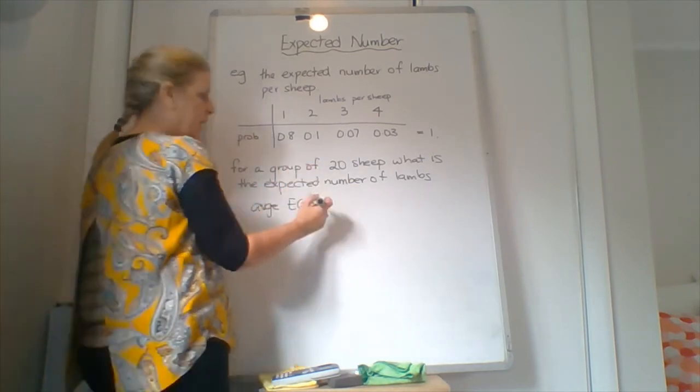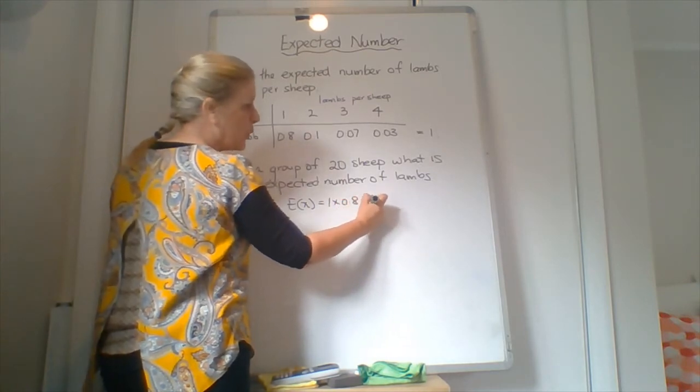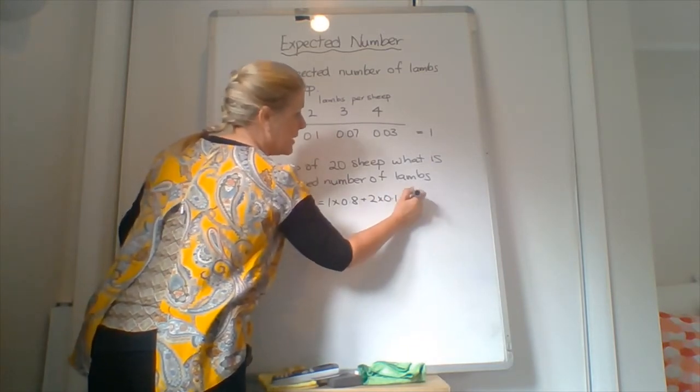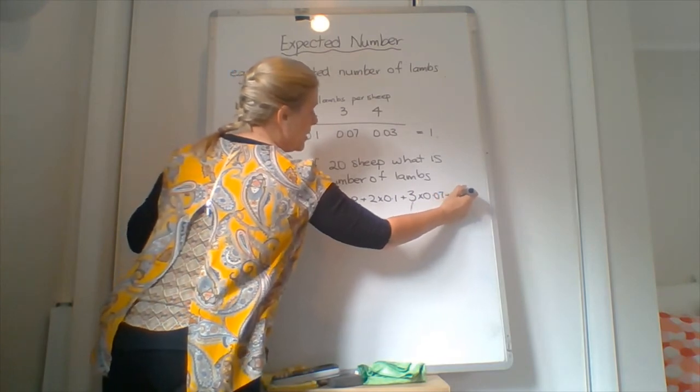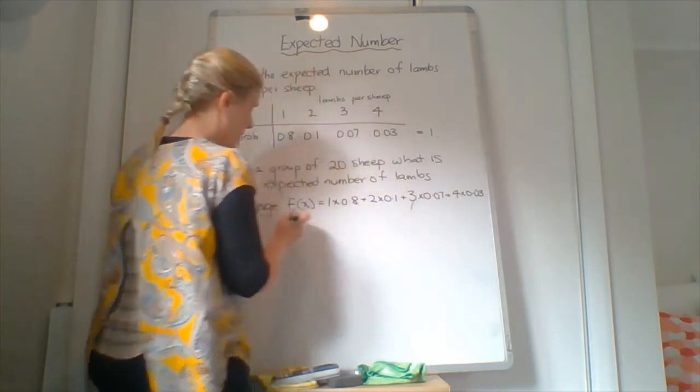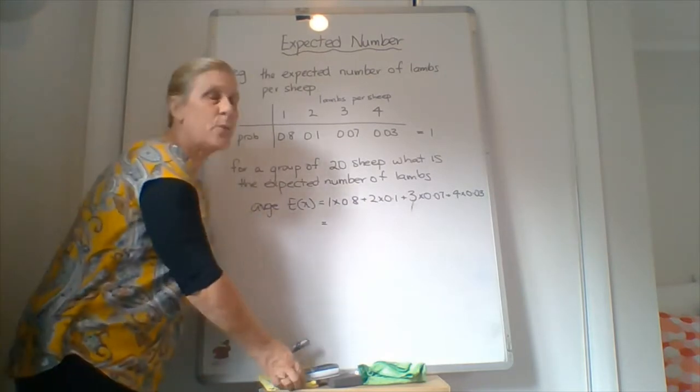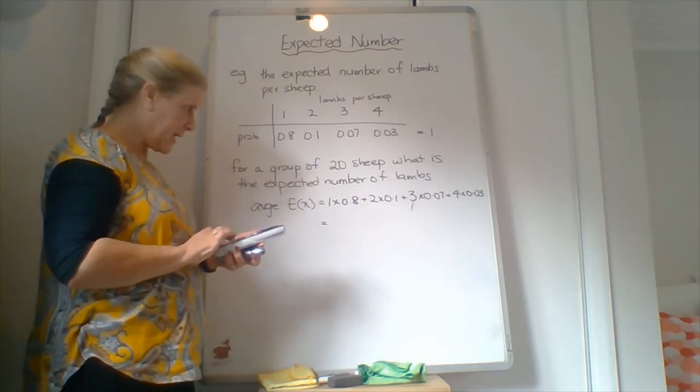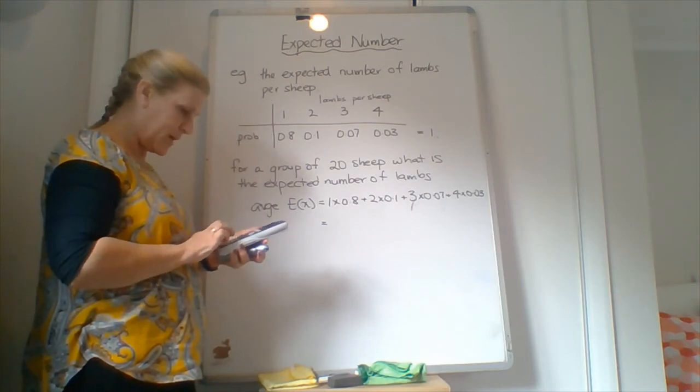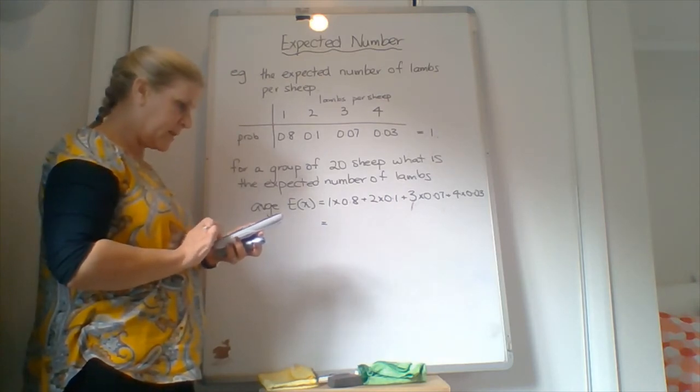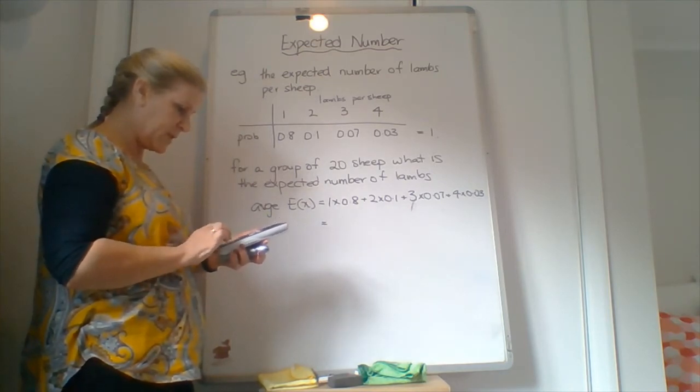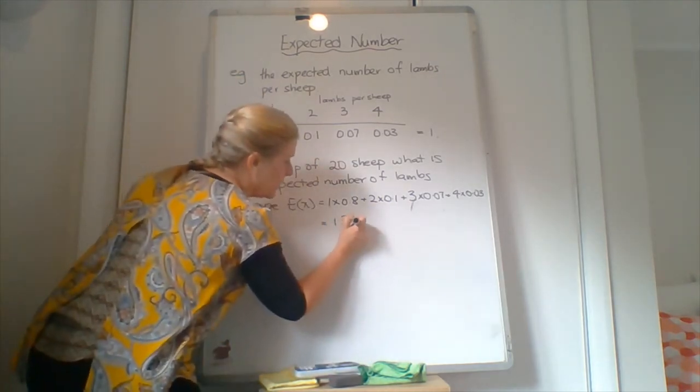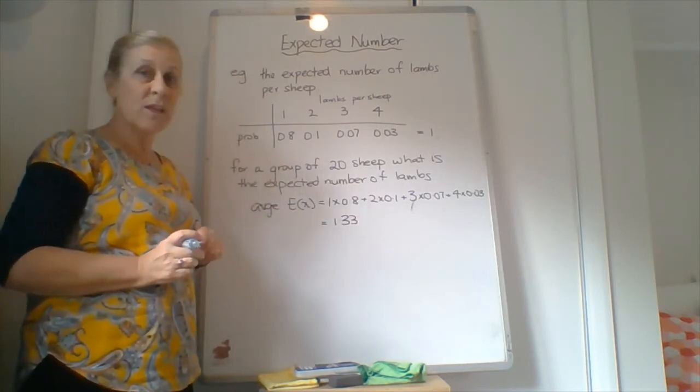We expect it to be 1 times 0.8, 2 times 0.1, 3 times 0.07 and 4 times 0.03. So we need to find out what that average for each sheep is. So we put in our calculator, 1 times 0.8 plus 2 times 0.1 plus 3 times 0.07 plus 4 times 0.03 equals 1.33. So on average per sheep, there will be 1.33 lambs.